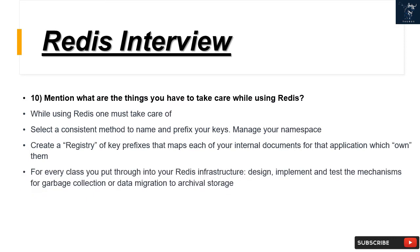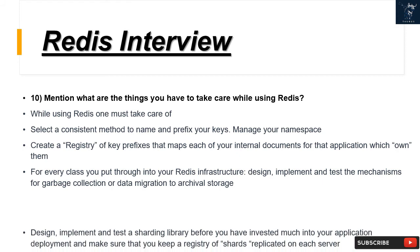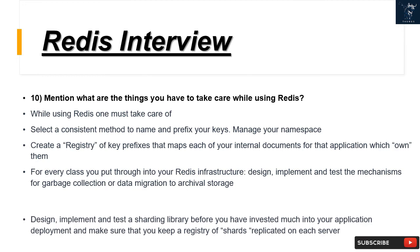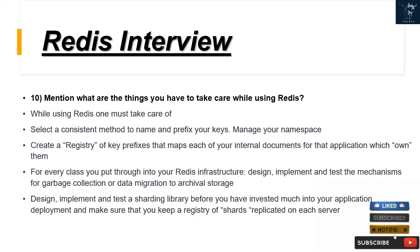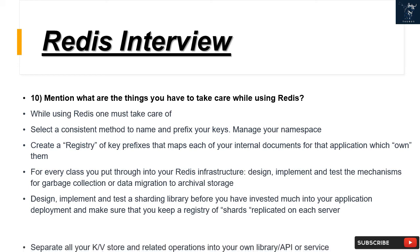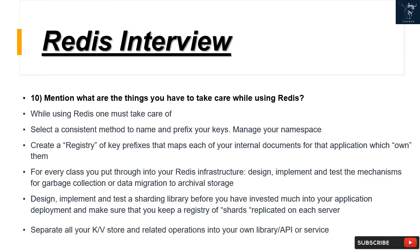Question 10: What are the things you have to take care of while using Redis? Select a consistent method to name and prefix your keys. Manage your namespace and create a registry of key prefixes that maps each internal document to the application that owns it. Design, implement, and test mechanisms for garbage collection or data migration to archival storage. Implement and test a sharding library before investing heavily in deployment, and keep a registry of shards replicated on each server. Store all Redis-related operations in their own library, API, or service.